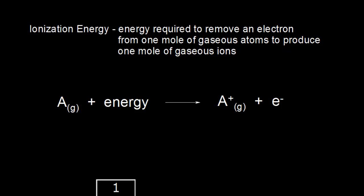Ionization energy refers to the energy that's required to remove an electron from a neutral atom. This A represents a neutral atom, meaning equal numbers of protons and electrons. Since the positively charged nucleus is going to attract those negatively charged electrons, it's going to take energy to pull an electron away from that attractive force of the nucleus. And so that's your ionization energy.